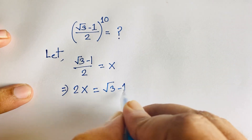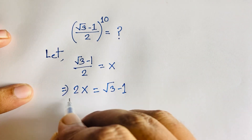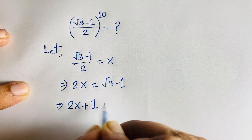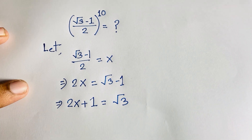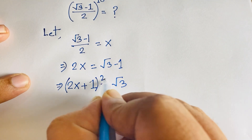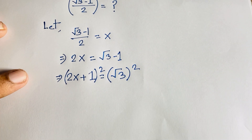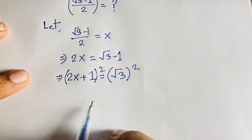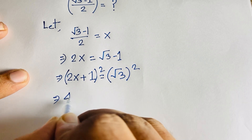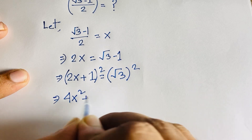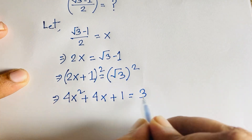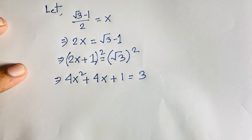Moving the negative 1 to the other side gives 2x plus 1 equals √3. Now I square both sides. Using the identity (a+b)² = a²+2ab+b², this gives 4x² + 4x + 1 = 3, since the square root cancels on the right.